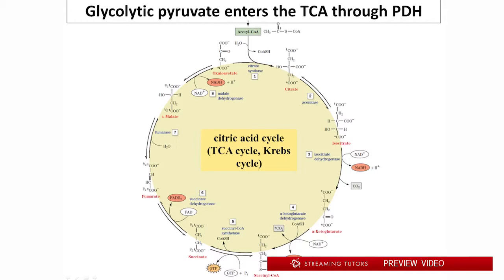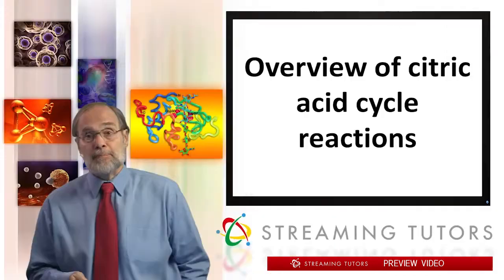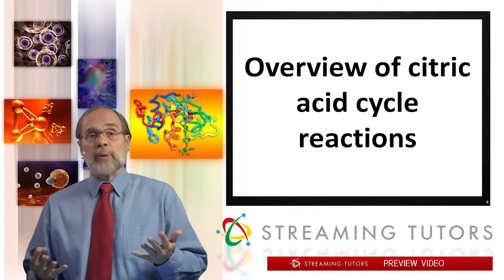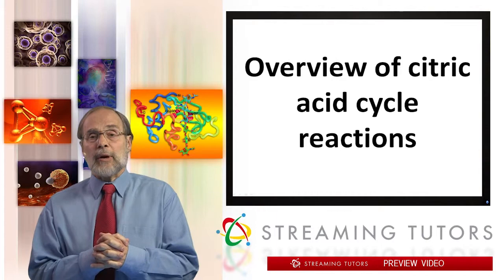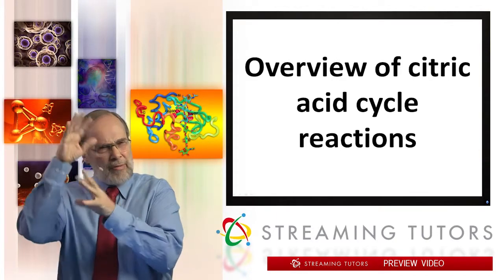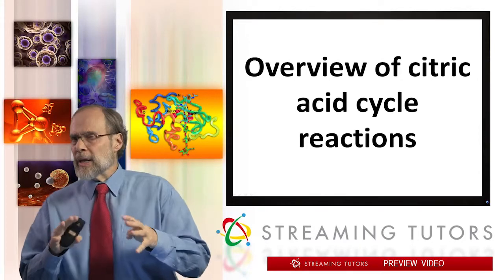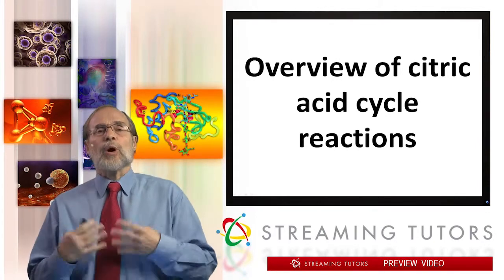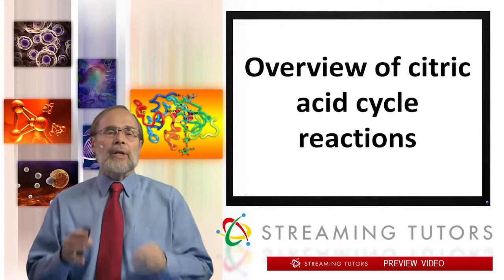This is the TCA cycle, also called the Krebs cycle or the citric acid cycle — all three names are used, though we'll mostly call it the citric acid cycle here. Glycolytic pyruvate enters through PDH, which makes acetyl-CoA, as does fatty acid degradation and some amino acid degradation. The goal of the next few minutes is to give you the big picture by doing a quick survey going all the way around the cycle. You may want to come back to this short segment several times as your expertise grows.